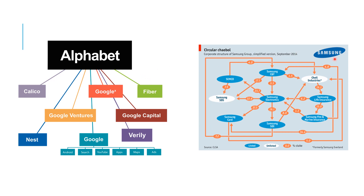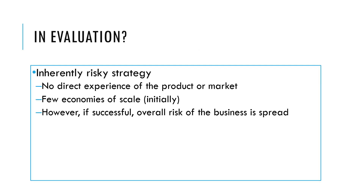Samsung is another company with many different areas — life insurance, fire and marine insurance, as well as their electronics business. These are very different, unrelated products and services sold into different countries. Diversification is inherently risky: we have no direct expertise in the product or customers in that particular market, and we're unlikely to achieve economies of scale because we're producing something very different.